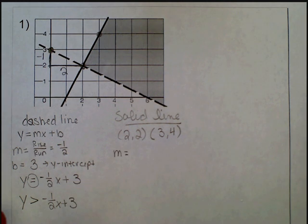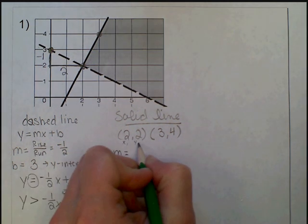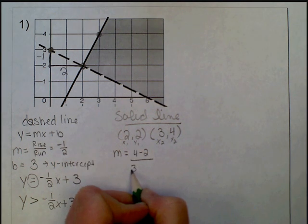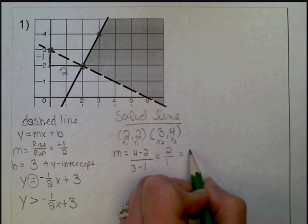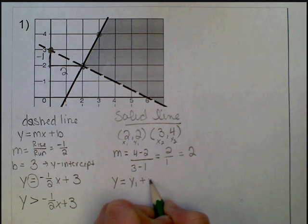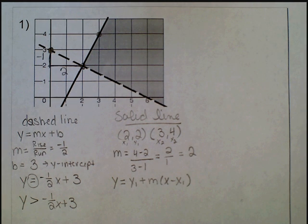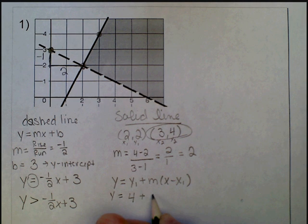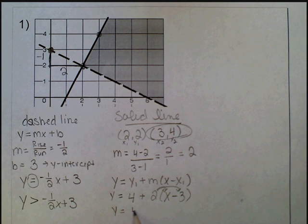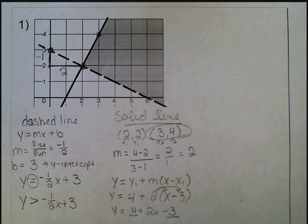I'll find my slope using the slope formula. This is x1, y1 and this is x2, y2. So I do 4 minus 2 over 3 minus 2, which gives me 2 over 1, which is just 2. Now I'll use point-slope form, plugging in y1 from the point (3, 4): y equals 4 plus 2 times x minus 3. Distributing: y equals 4 plus 2x minus 6. Collecting like terms: y equals 2x minus 2.